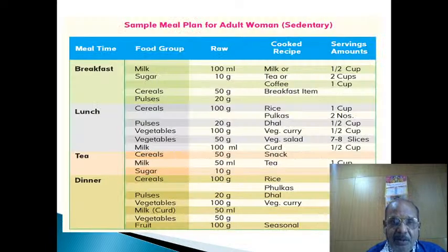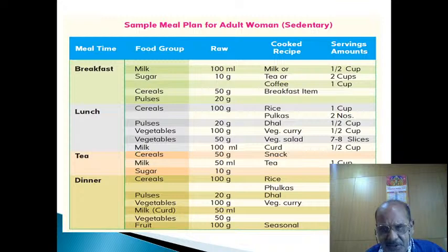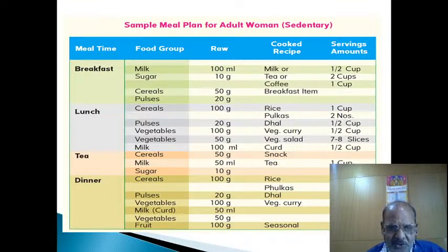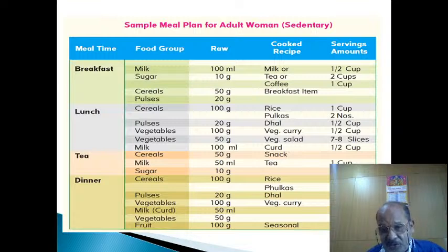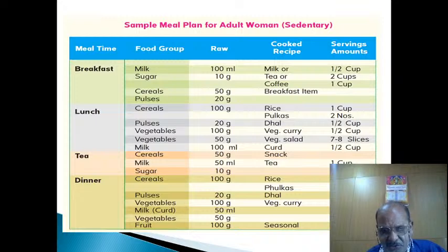Similarly, here is the sample meal plan for an adult woman. For breakfast, milk is 100 ml — half a cup — sugar 10 grams, and cereal 50 grams, much like adult men. For lunch, she should take 100 grams, that is one cup of rice only, while the adult man takes two cups of rice and two pulkas. Pulses are 20 grams — half a cup — and vegetables 100 to 150 grams. In the evening tea time, milk again, and at night pulses 20 grams, vegetables 50 grams, and fruit.